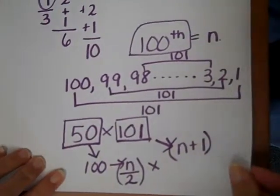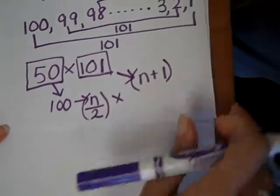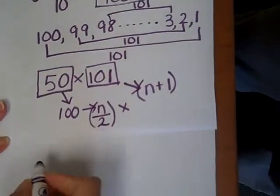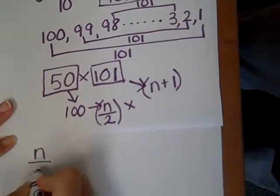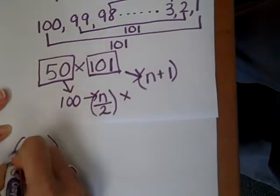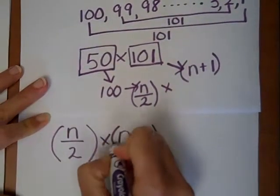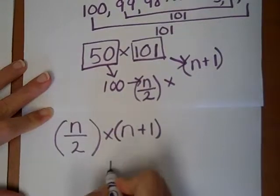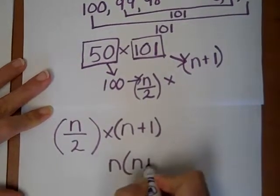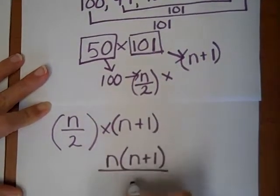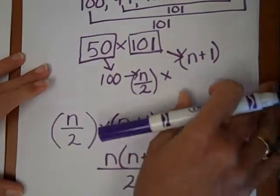So here we get the formula for the nth number in the series. We have n divided by two times n plus one, and when we write that we can write it differently. We could put n times n plus one divided by two.